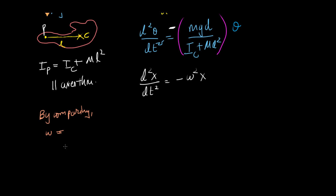The square root of mgd divided by I about the center of mass plus md squared.